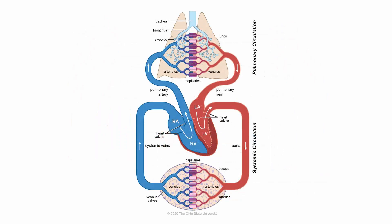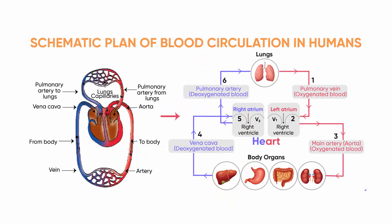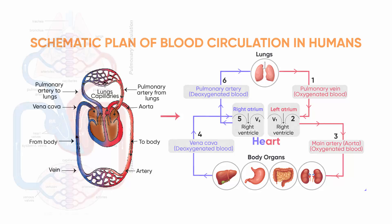The heart pumps blood in arteries to the lungs to pick up oxygen. The oxygen-rich blood travels back in veins from the lungs to the heart – these are the only veins that carry blood with oxygen. The heart then pumps the oxygen-rich blood in other arteries to the rest of the body. The blood from the rest of the body, which is now low in oxygen, travels back to the heart in veins.